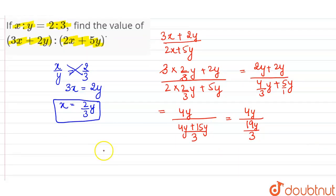When we reciprocate the denominator, this is equal to 4y into 3 divided by 19y. So y will be cancelled with y, 4 into 3 is 12.